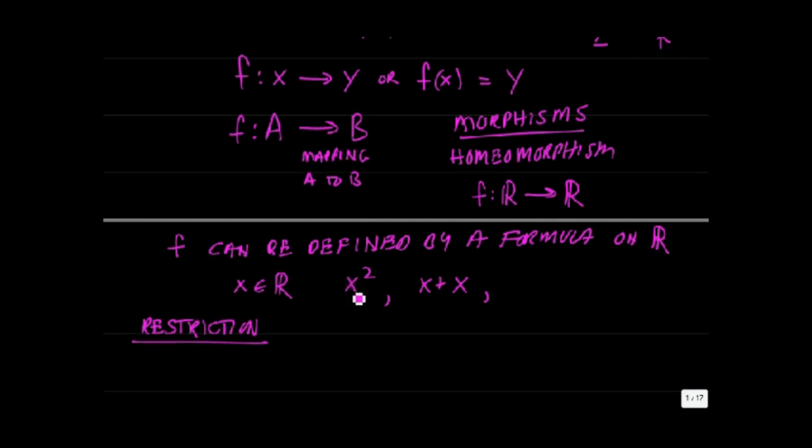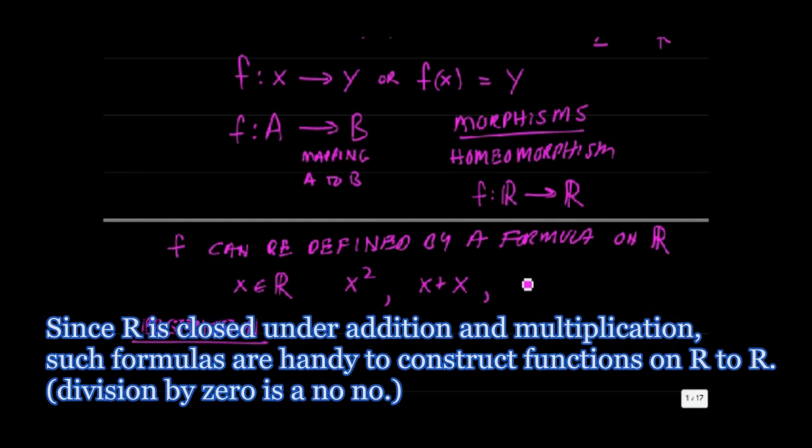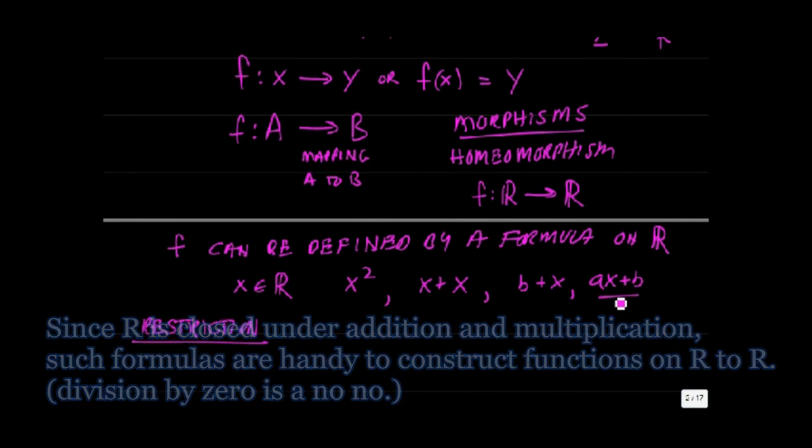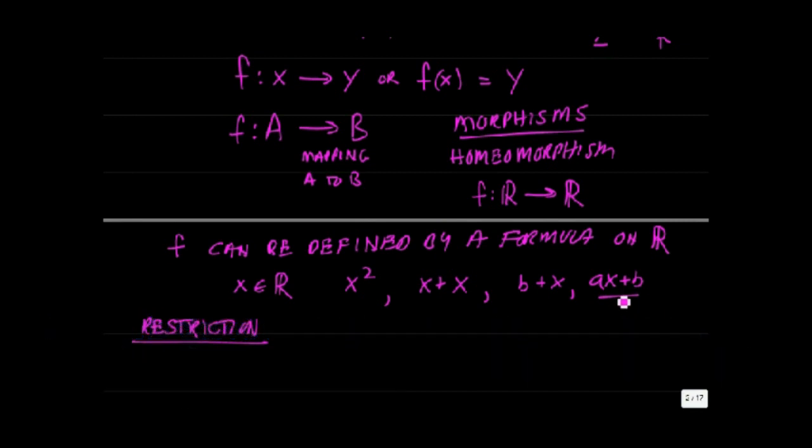It can be defined by a formula because you have an algebraic field of elements of R. So you can calculate a new element x squared, or you can add two elements together, or you can add a number B to x, or multiply it by a specified number, and get these various functions that make use of the algebra of the real numbers.